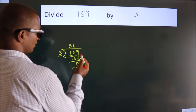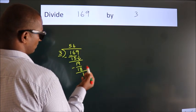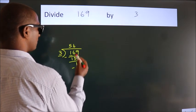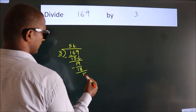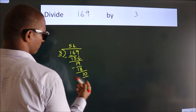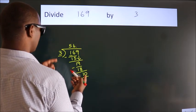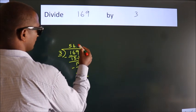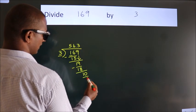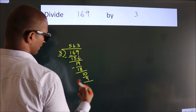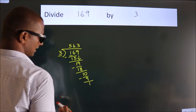After this, no more numbers to bring it down. So what we do is, we put dot take 0. So 10. A number close to 10 in 3 table is 3, 3s, 9.